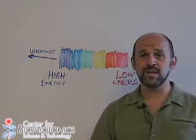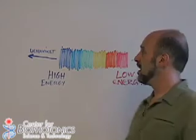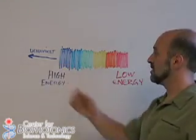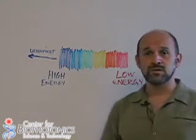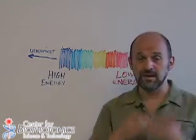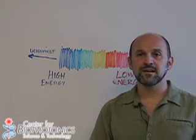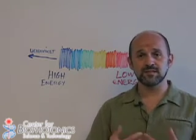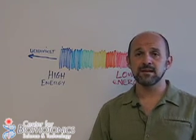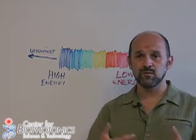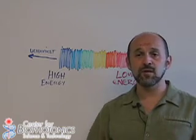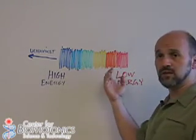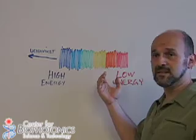Fluorescence occurs when you take light of higher energy, like ultraviolet light, which we can't see with our naked eyes, and you shine that light on matter. That matter becomes excited, and upon relaxing or calming down, it gives off light that is of lower energy that you can see.